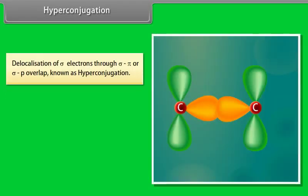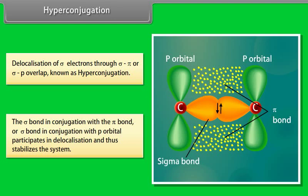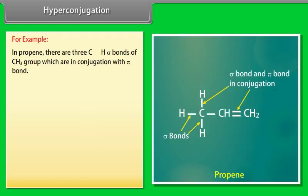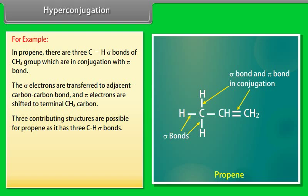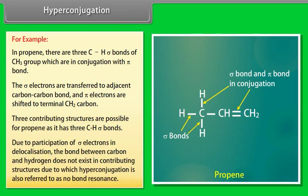Hyperconjugation is the delocalization of sigma electrons. A sigma bond in conjugation with a pi bond, or a sigma bond in conjugation with a p orbital, participates in delocalization and stabilizes the system. For example, in propene, the three C-H sigma bonds of the CH3 group are in conjugation with the pi bond. The sigma electrons are transferred to the adjacent C-C bond and the pi electrons are shifted to the terminal CH2 carbon. Three contributing structures are possible for propene. Due to the participation of sigma electrons in delocalization, the C-H bond does not exist in contributing structures, which is why hyperconjugation is also referred to as no-bond resonance.